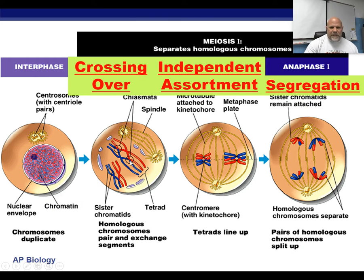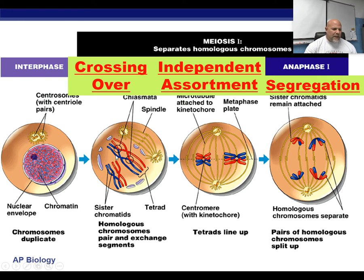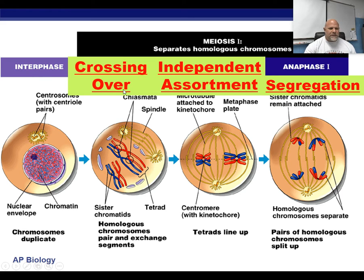So we have a few events here going on in the first division of meiosis. All of the cool stuff that happens, happens in the first division. The second division is pretty much just like mitosis. So in the first division you have homologous pairs of chromosomes — right after they condense, the homologous pairs will match up and they will wrap around each other and form a tetrad. These tetrads will wrap around each other fairly tightly and they will start exchanging portions of the chromosomes with one another. And we call that crossing over.